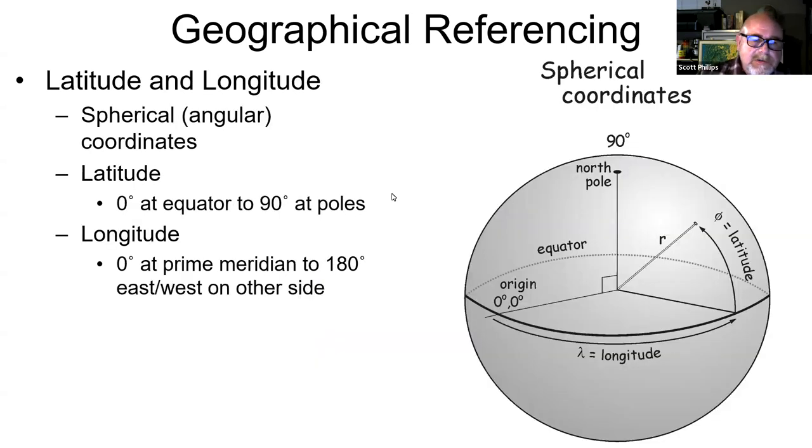Latitude and longitude are spherical or angular coordinates. Latitude goes from zero degrees at the equator to 90 degrees at the poles, and it has 180 degrees east and 180 degrees west from the prime meridian, which is an arbitrary line through Greenwich, England, where the system was devised.